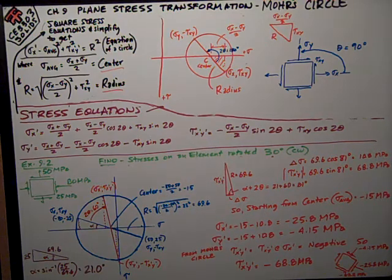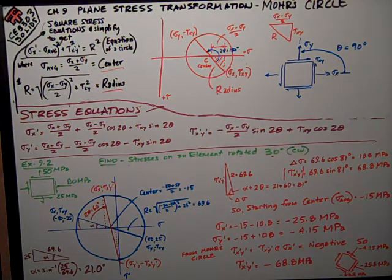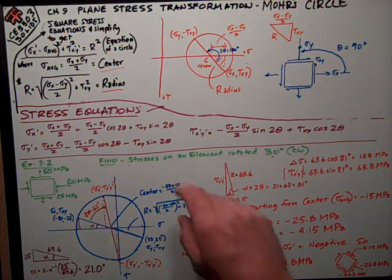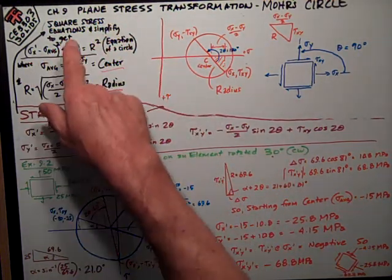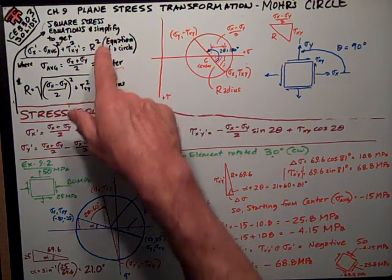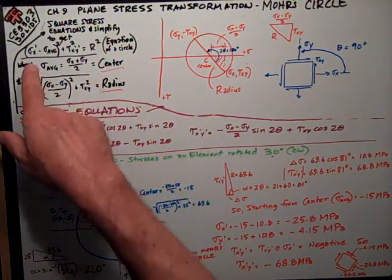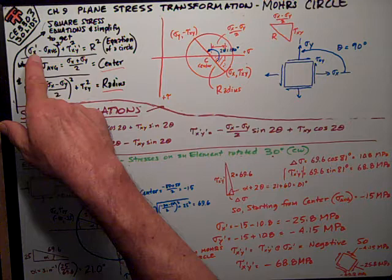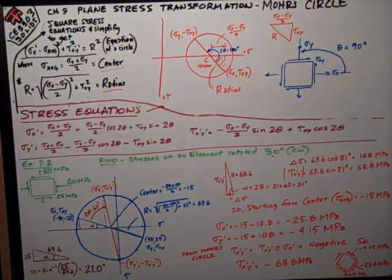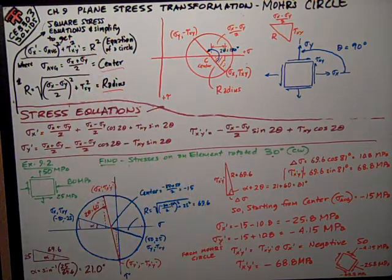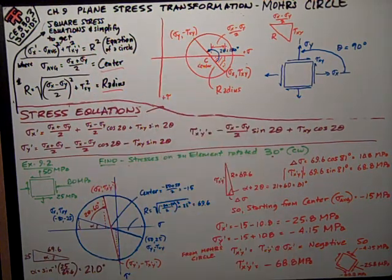It's been observed that you can take these stress equations and simplify them and rearrange them to get this form: sigma x prime minus sigma average squared plus tau x prime y prime squared equals R squared. That is the equation of a circle.